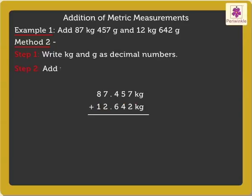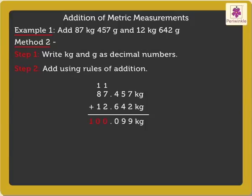Step 2: Add using rules of addition learned earlier. Thus, on adding these numbers, we get 100.099 kilograms, which is 100 kilograms 99 grams.